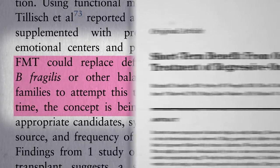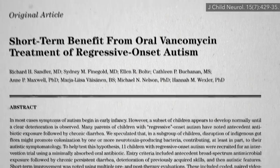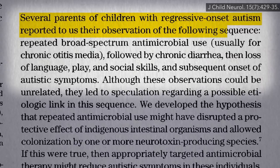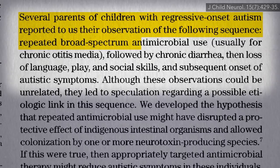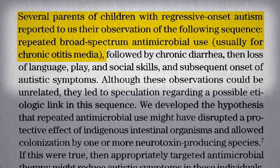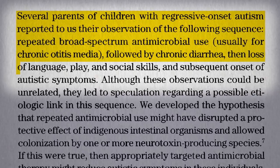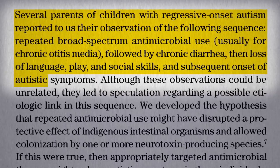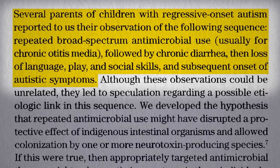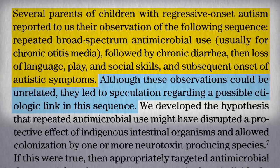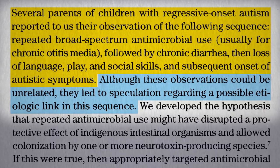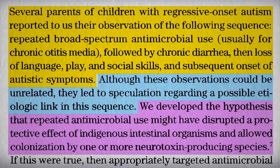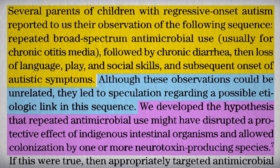It can all be traced back to this remarkable study published in the Journal of Child Neurology. Several parents of children with regressive-onset autism — meaning the kids started out acting normally before the autism struck — noted that it all seemed to start after their child had taken antibiotics. They had gotten chronic diarrhea, suggesting the antibiotics had mucked with their gut flora, and then came the loss of language, play, and social skills. This could be a total coincidence, but it led a group of pediatric gastroenterologists to speculate that maybe there was some sort of cause-and-effect link — that by wiping out the good bugs, some bad neurotoxic bugs took hold, and that led to the autism.